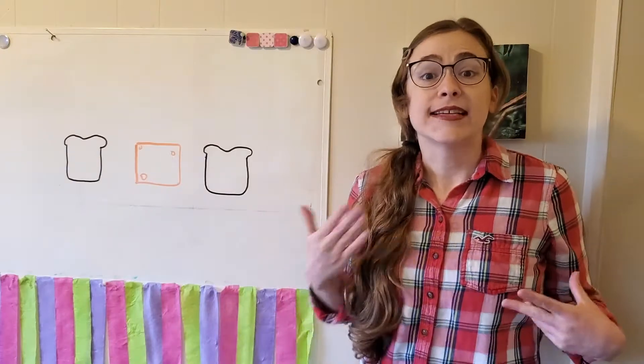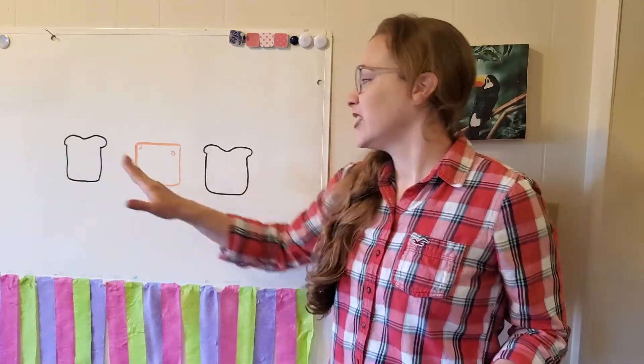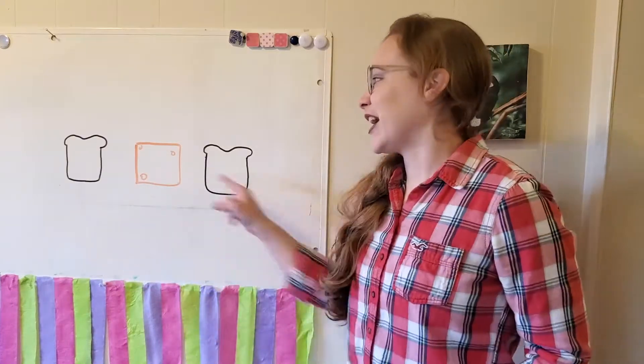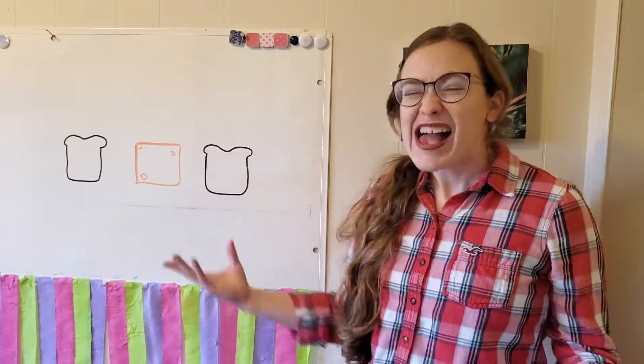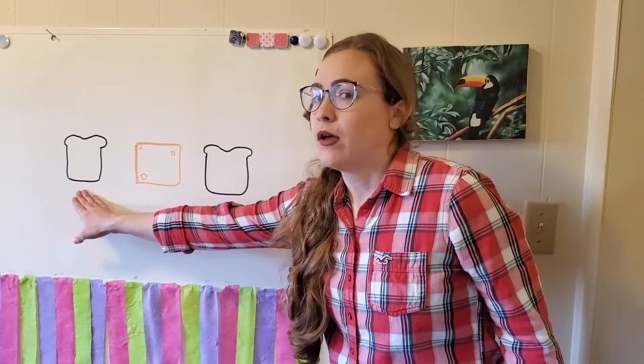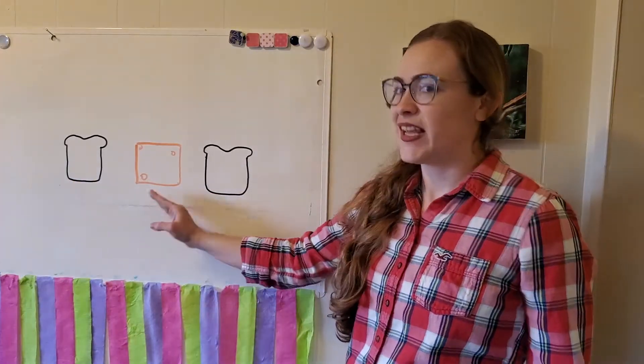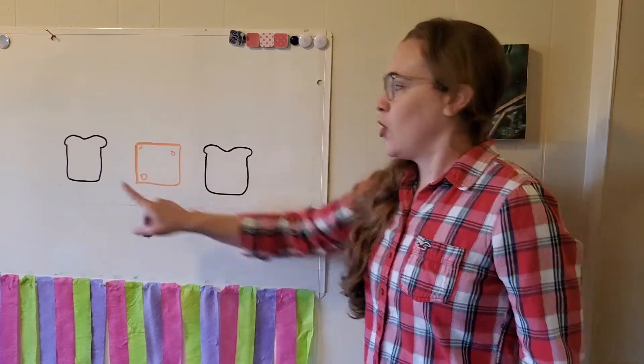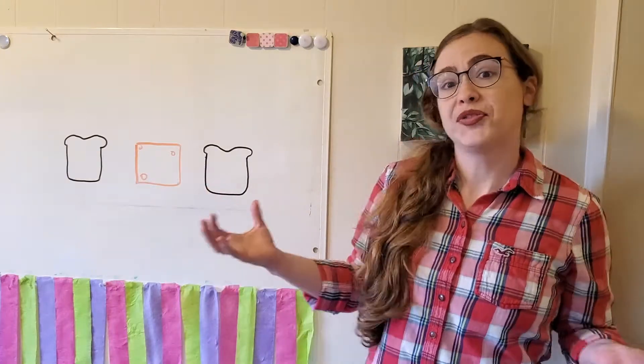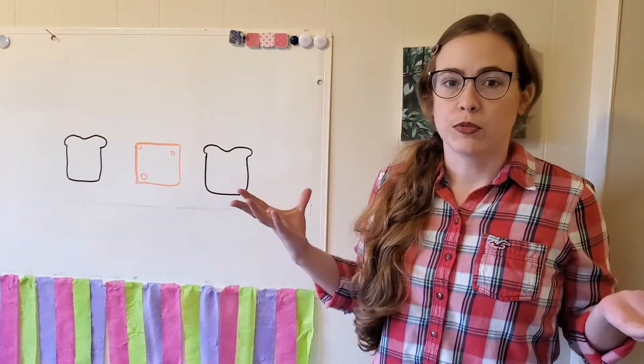So, cat is a CVC word. Consonant, vowel, consonant. Or, as we like to call them, sandwich words. So, every CVC sandwich word has a beginning sound, a middle sound, and an end sound. One, two, three. It's our job to figure out what those sounds are to build the word.